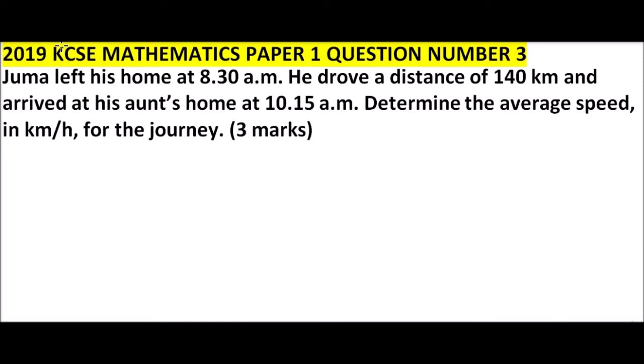So we can start here by saying from Juma's house, maybe you can use a line. This is Juma and this is the aunt's house. So he started at 8:30 a.m. and arrived at 10:15 a.m. Now given that the distance is 140 kilometers.